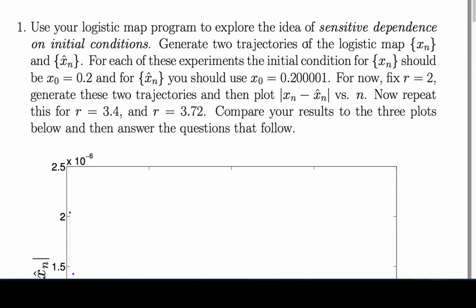If the attractor is chaotic, the two initial conditions will move chaotically through the attractor, and the distance between them will also change chaotically.